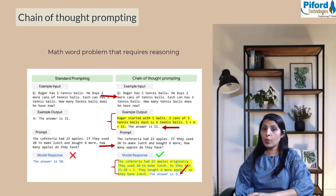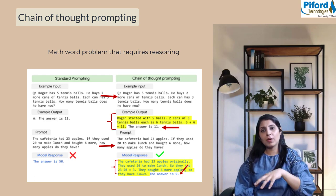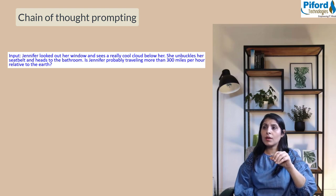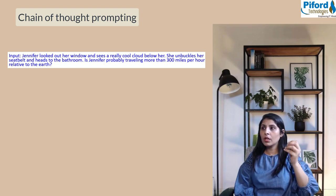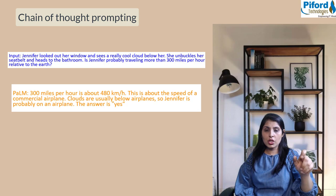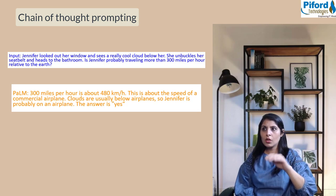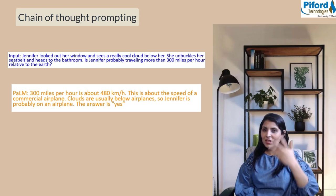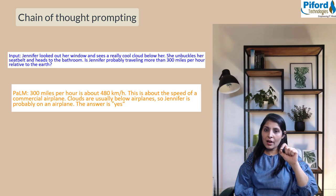Let me share one more example comparing GPT-3 and PaLM output. The input is: Jennifer looked out her window and sees a cool cloud below her. She unbuckles her seatbelt and heads to the bathroom. Is Jennifer probably traveling more than 300 miles per hour relative to Earth? PaLM replied: 300 mph is about 480 km/h, this is about the speed of a commercial airplane. Clouds are usually below airplanes, so Jennifer is probably on an airplane. The answer is yes. What an incredible answer!